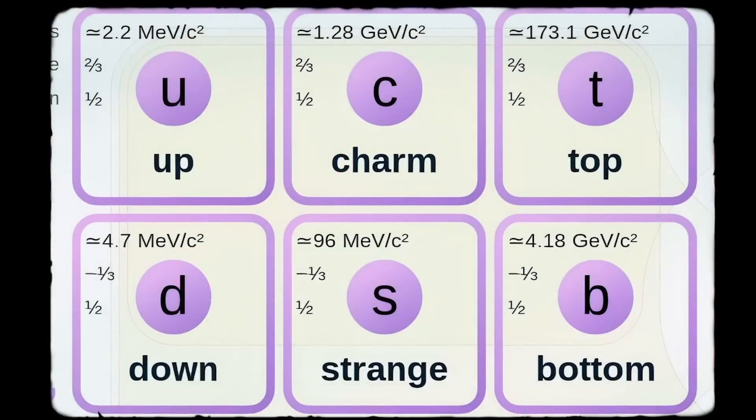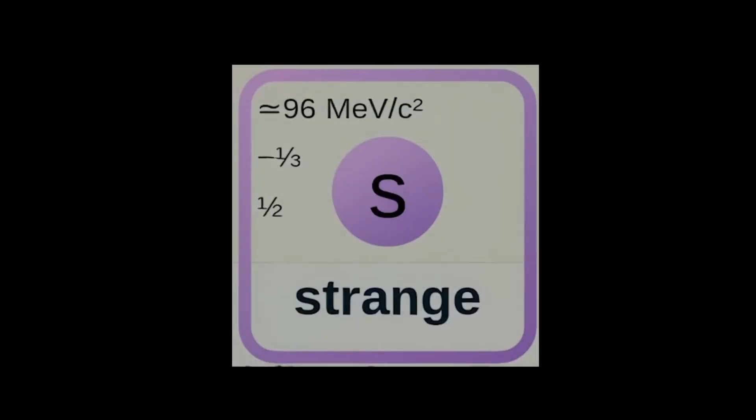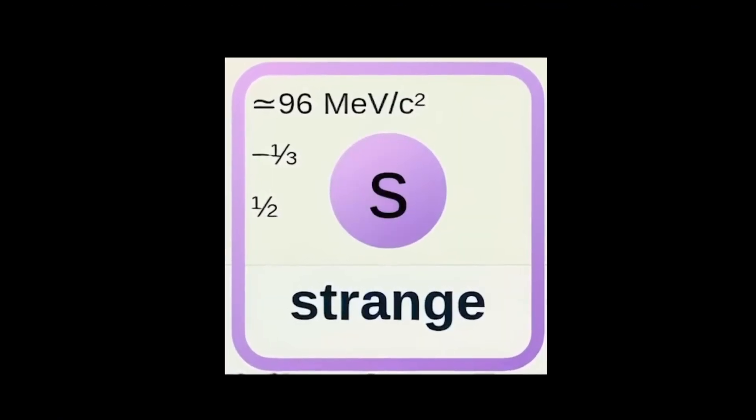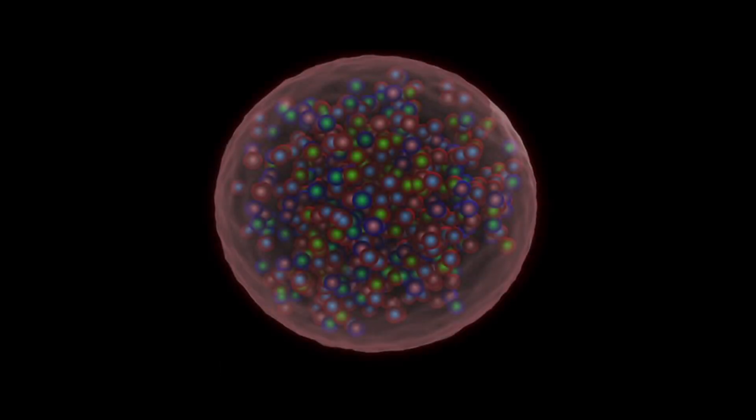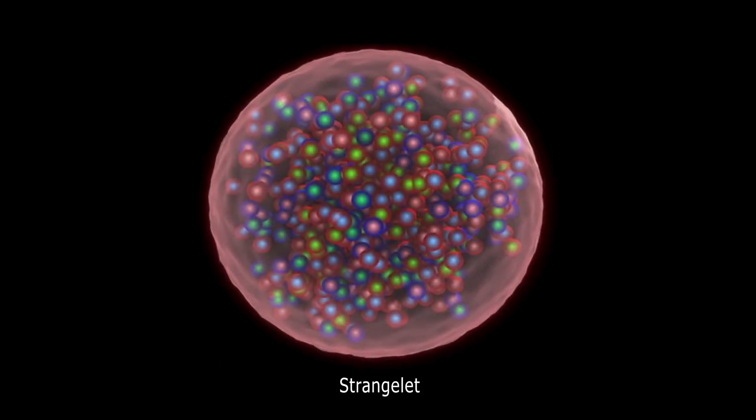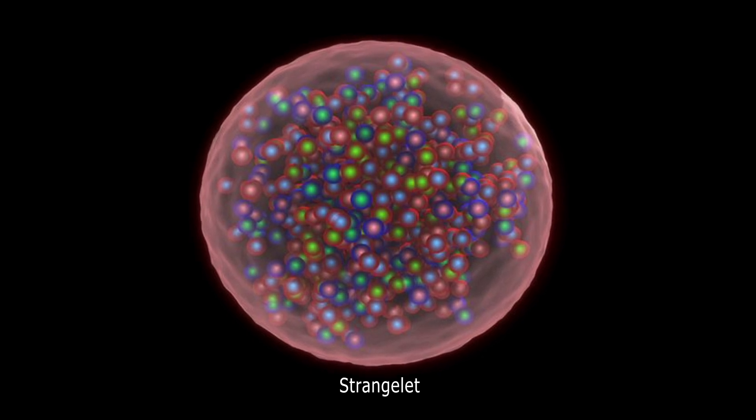There are also less common types, such as strange quarks. When strange quarks combine with up or down quarks, they can form a type of exotic particle called a strangelet, which is a component of strange matter.